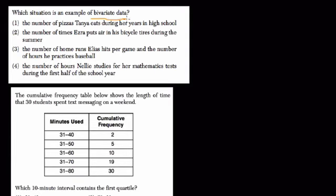Which situation is an example of bivariate data? Bivariate means two variables, and the variables x and y or whatever impact each other. So you're studying the relationship between two things. The number of pizzas Tony eats during her years in high school is just kind of a frequency. The number of times Ezra puts air in his bicycle tires during the summer, that's again just a frequency, a univariate. The number of home runs hits per game and the number of hours he practices, that's your bivariate. Because you're connecting the number of hours you practice with the home runs. How does practice affect your ability? That's bivariate.